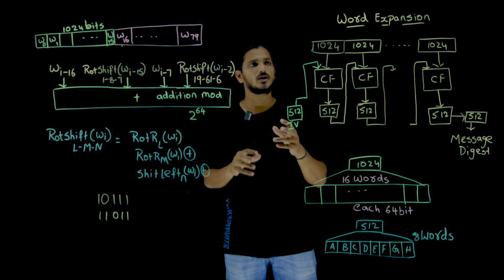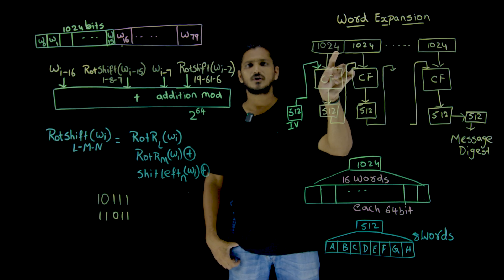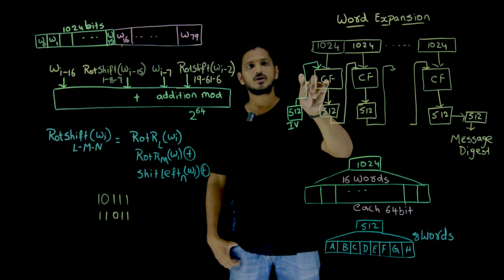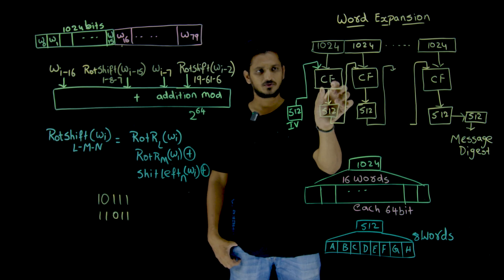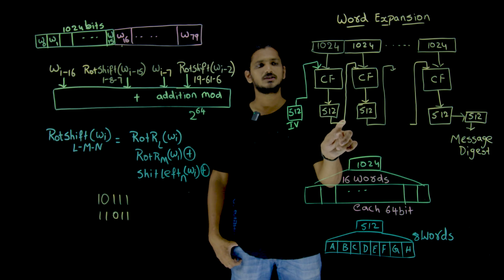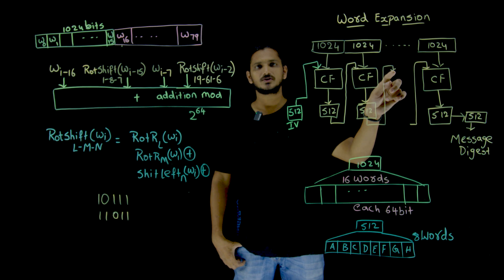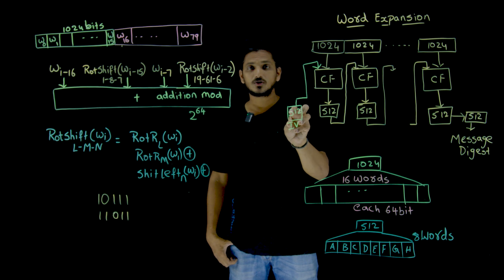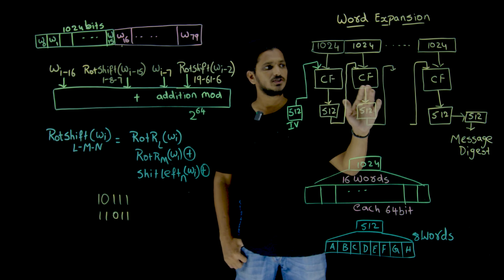What we understand from our last class is the entire message is divided into blocks of 1024 bits, and each 1024-bit block is sent into a compression function. For the compression function, one more input is provided — a 512-bit input. The output from the first block is 512 bits, and this 512 is given as input to the second compression function, and so on. The first 512 is the constant values, which we'll discuss in our next class.